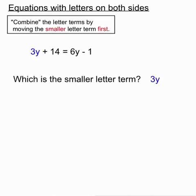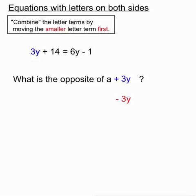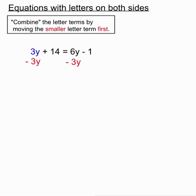3y minus 3y cancels out leaving us with 14 on the left hand side. On the right hand side we have a 6y take away a 3y which leaves us with 3y, and we have a minus 1 on that right hand side. Once again we have a two-step equation and we should be confident at solving them by now.